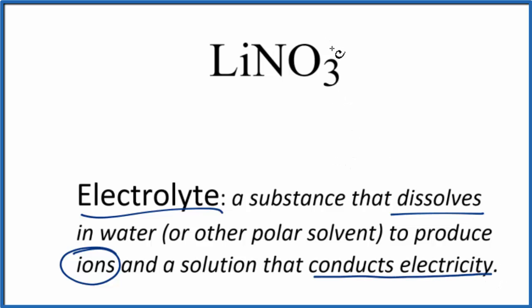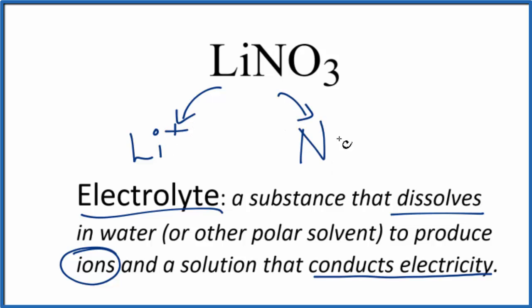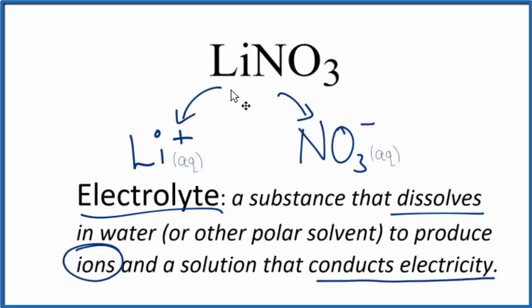If you know your solubility rules, compounds with the nitrate ion are very soluble. So we put this in water, it's going to dissolve and dissociate into its ions. We'll end up getting the lithium ion — that's Li+ — and then we'll get the nitrate ion, that's NO3-. Let's put aqueous after these since they are dissolved in water. So we put this lithium nitrate in water; we know it's soluble because it's a nitrate, so it dissociates completely into these ions.